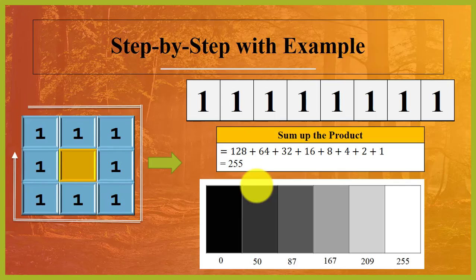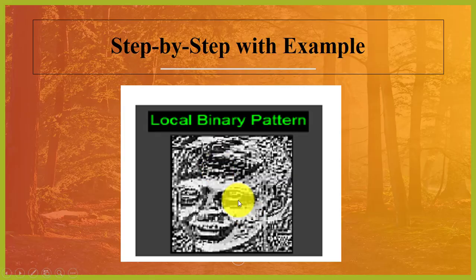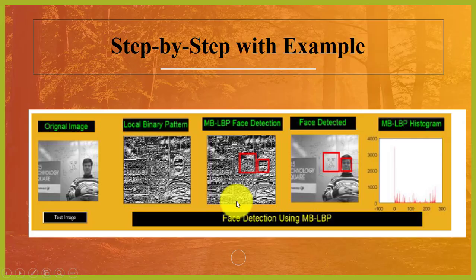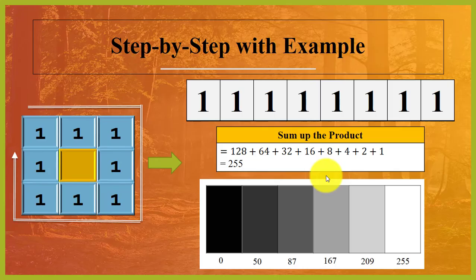That's how we compute the LBP code. You can use LBP for feature extraction from digital images. We have white, grayscale, and black pixels — using LBP we can extract facial features from digital images and apply this for face detection and multiple face detection. If you have any questions, comment below, and thanks for watching.